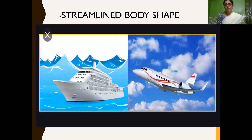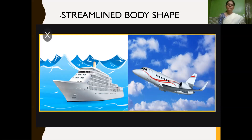By observing birds, humans invented the aeroplane — the aeroplane body is also streamlined, broader in the middle and tapering at both ends. Similarly, a fish's body is also broader in the middle and tapering at both ends, which reduces the fluid friction of water so that it can swim easily. By observing this, the shape of boats and ships also have a streamlined shape — broader in the middle and tapering at both ends. So, children, fluid friction depends upon the nature of the fluid, the shape of the object — mainly streamlined shape causes less fluid friction — as well as the speed of the object: more the speed, more the fluid friction.